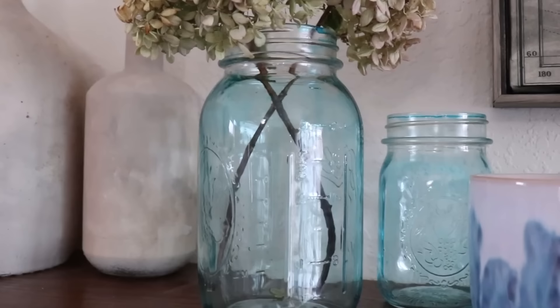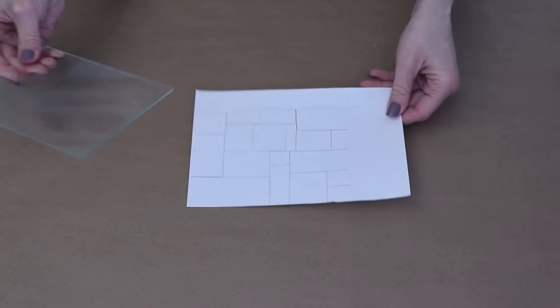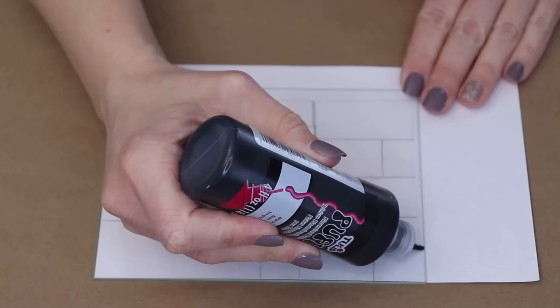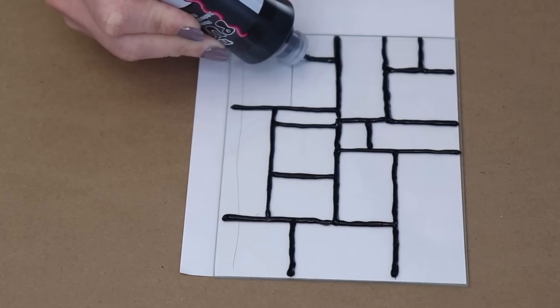I'm going to take the piece of glass out and I'm going to draw a grid of squares and rectangles with black puffy paint. When that's done, I want to let that dry completely.